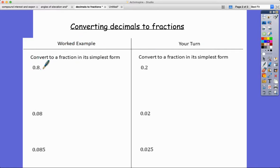So worked example, convert to a fraction in its simplest form. Now my top tip here is that you will look for how many decimal places are in this decimal. In this decimal I can see one decimal place, so I know that I'm going to have one zero on the bottom in my denominator: ten.